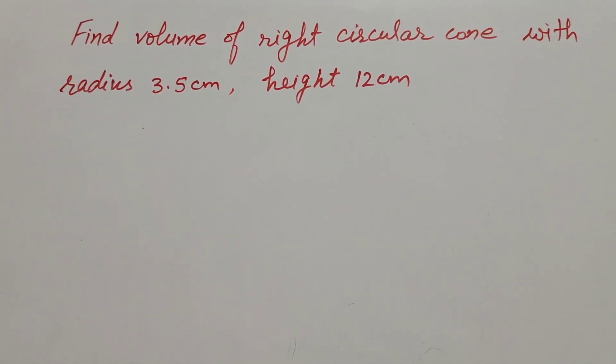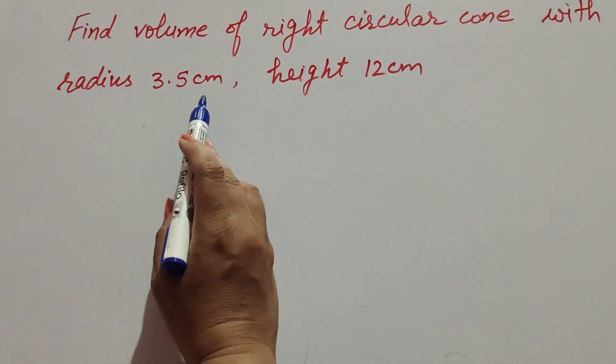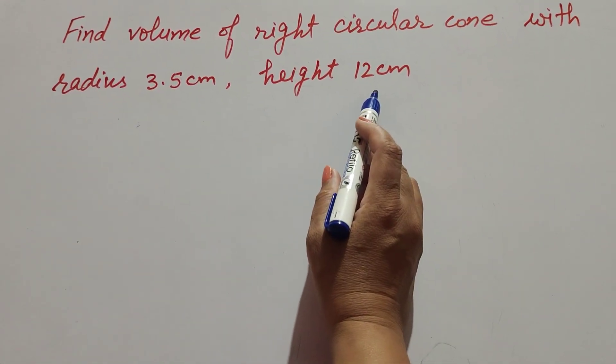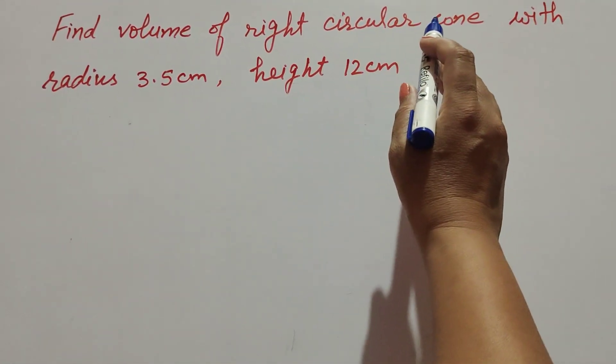Hello friends, welcome to my channel. In this video we'll find the volume of a right circular cone with radius 3.5 cm and height 12 cm. In this question the given values are radius and height, and we need to find the volume of the right circular cone.